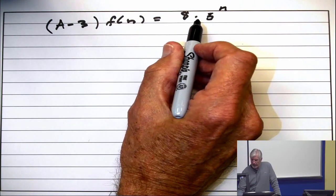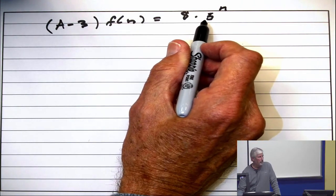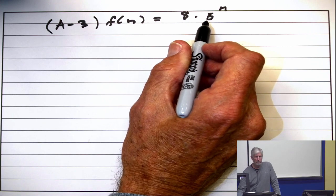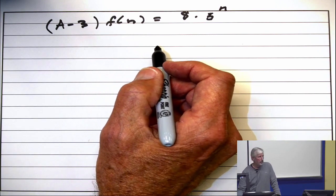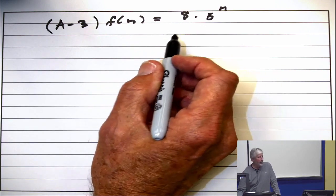You know, when I'm writing by hand, I can put a dot in there. When I'm doing it on PowerPoint, I usually put the 5 in parentheses so that you don't confuse it with an 85.